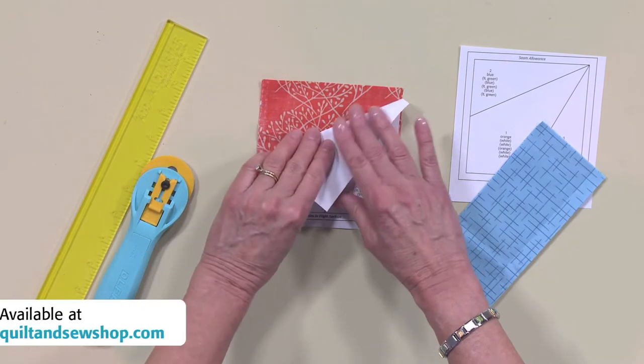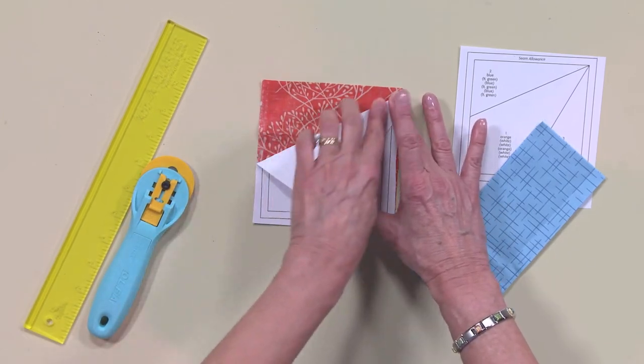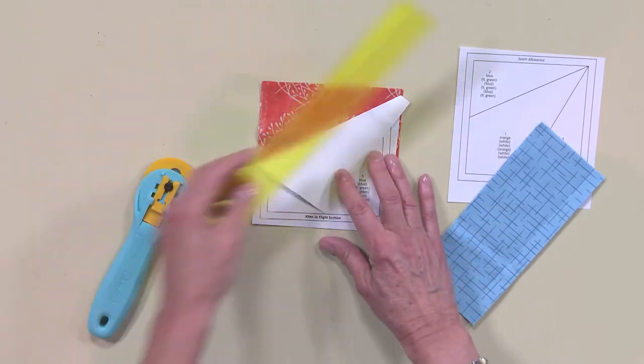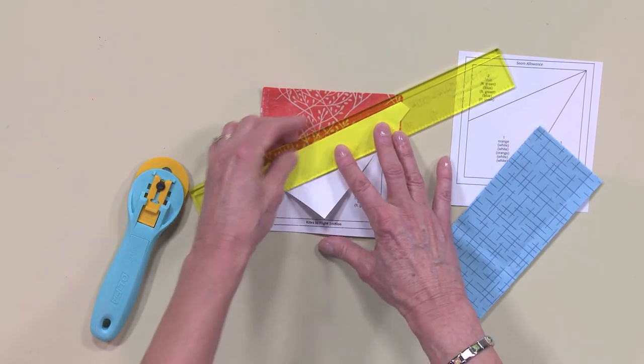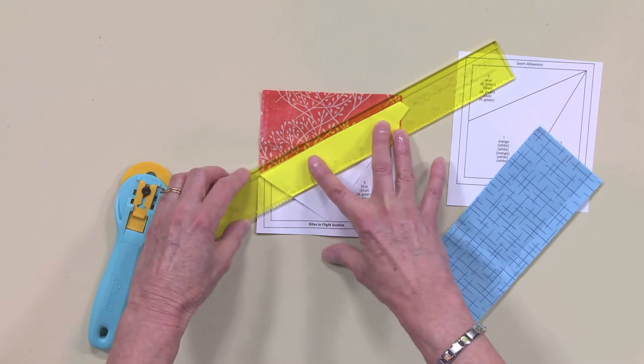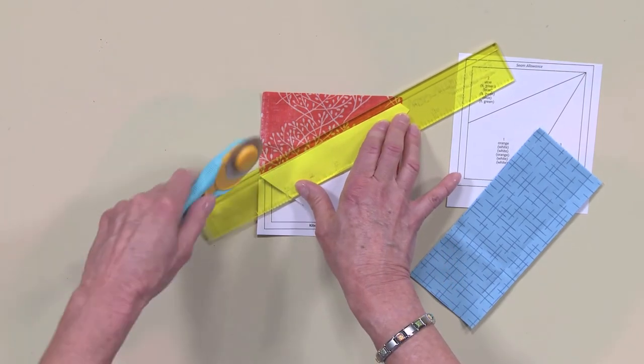So what I've done is folded the foundation back along the line, and I'm going to position the add a quarter so that the little edge is right on that fold. And then I can take my rotary cutter and trim away.